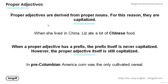Note that proper adjectives are derived from proper nouns and so they are capitalized. For example, in the sentence 'When she lived in China, Liz ate a lot of Chinese food,' the proper adjective 'Chinese' is capitalized and is derived from the proper noun 'China.'